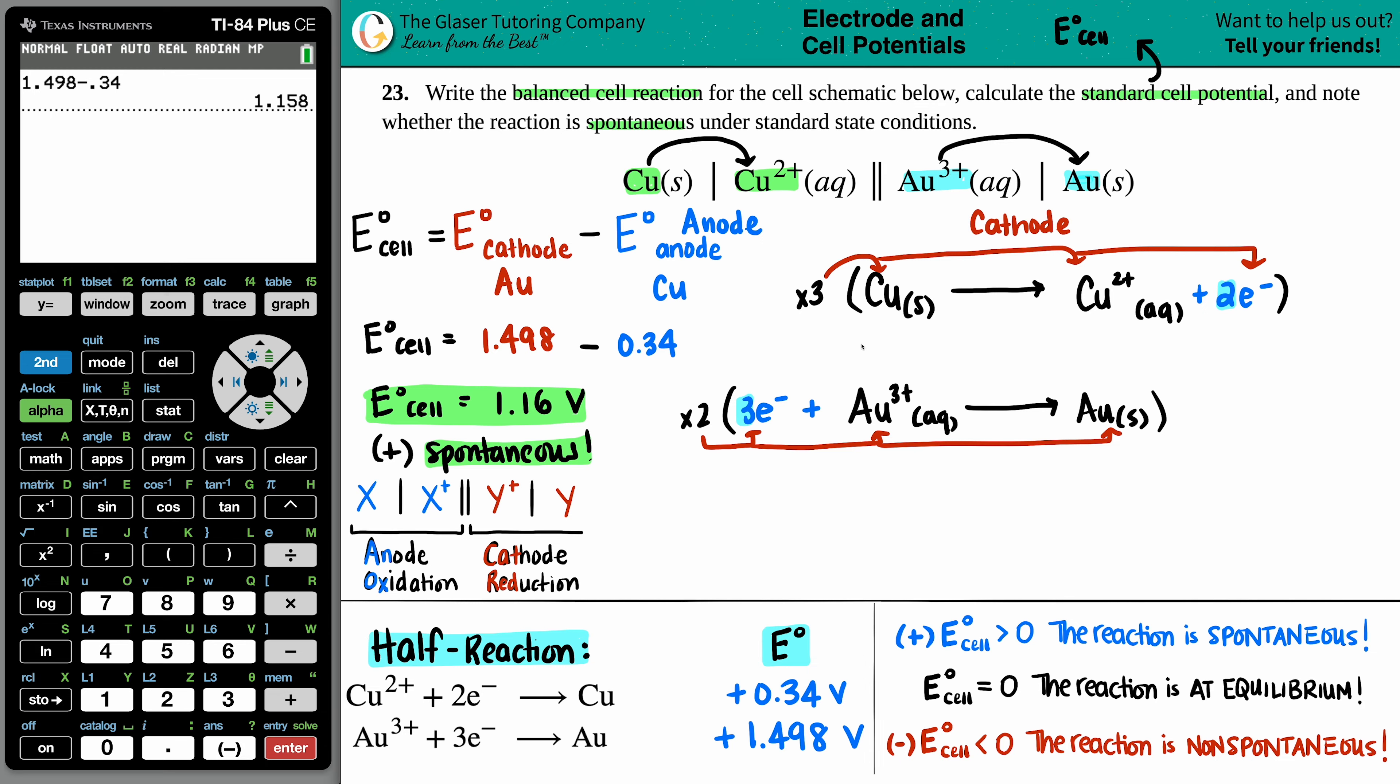So now what I'm going to have is three Cu solids yields three Cu2 plus aqueous. And that's plus the six electrons. And once I make my new equation, I don't care about this one anymore. And now I'm going to have six electrons here plus two Au three pluses yields two Au solids. I wrote the new equation.